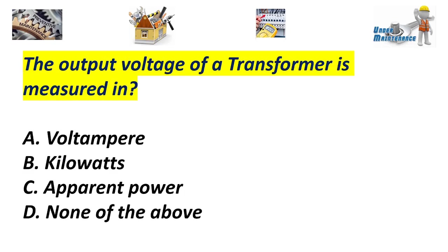The output voltage of a transformer is measured in: A. Volt-ampere. B. Kilowatts. C. Apparent power. D. None of the above. Answer: A. Volt-ampere.